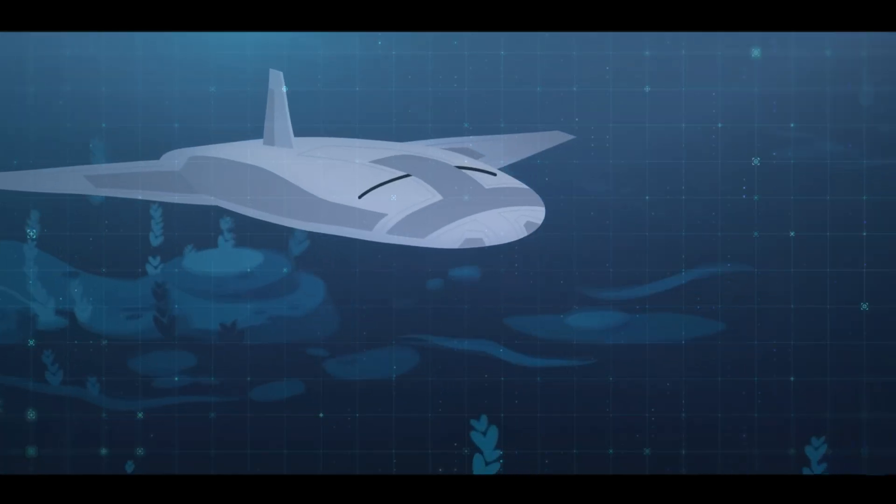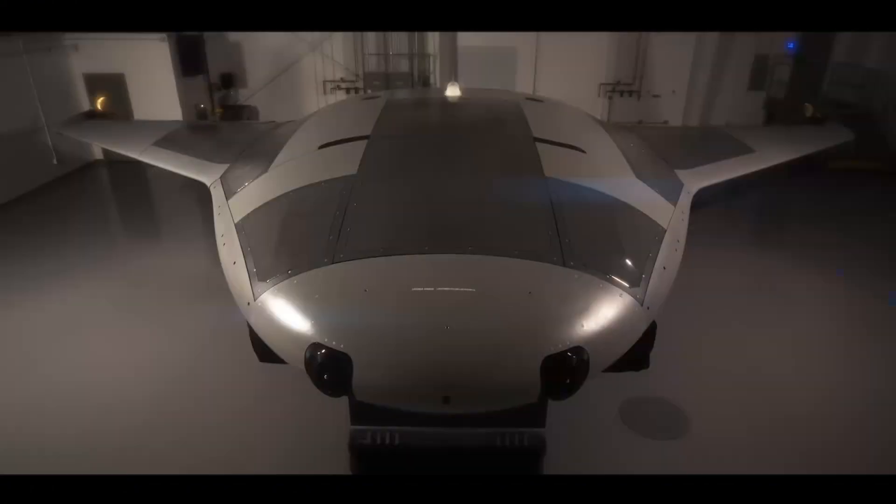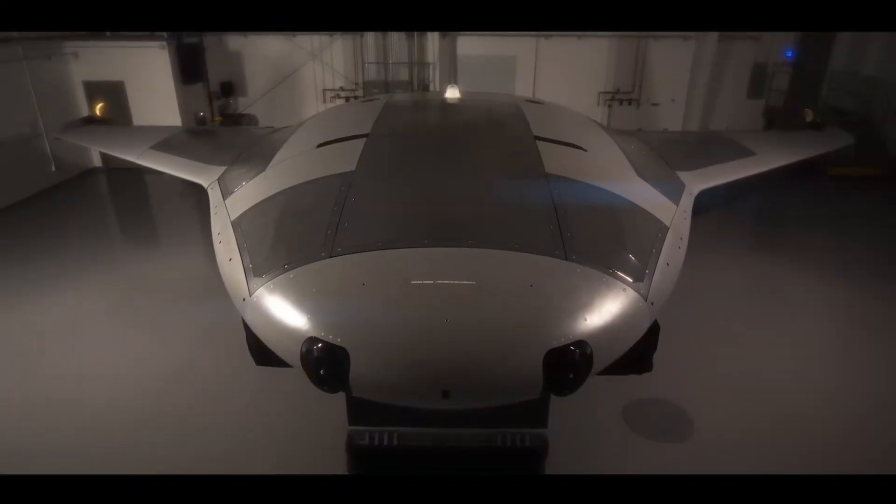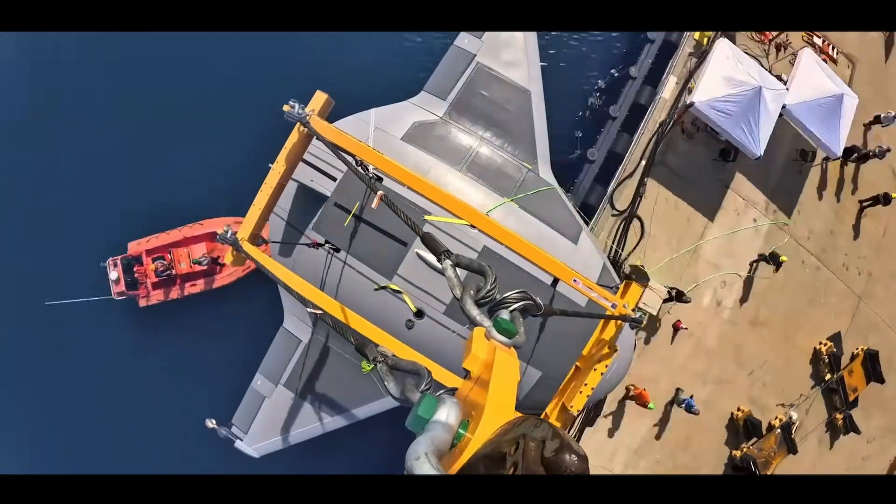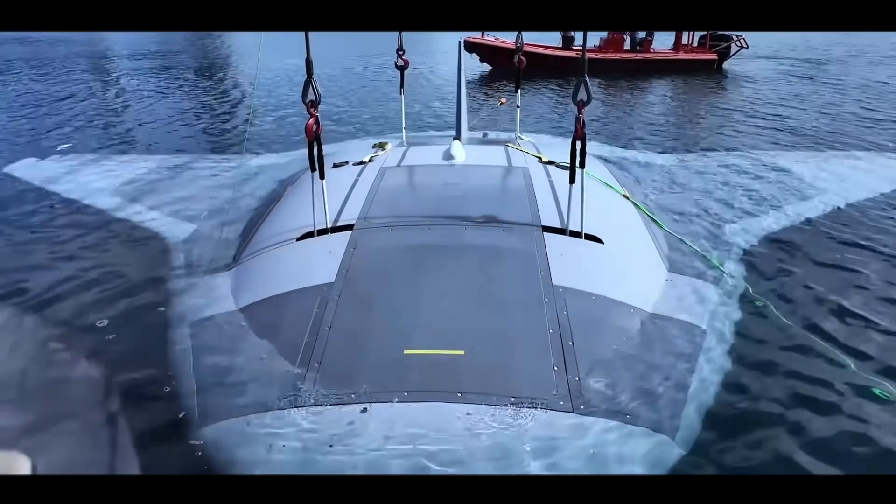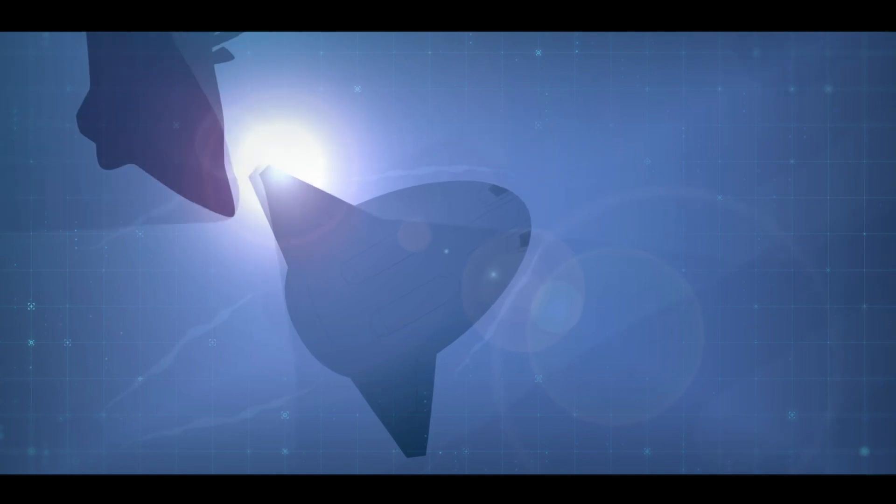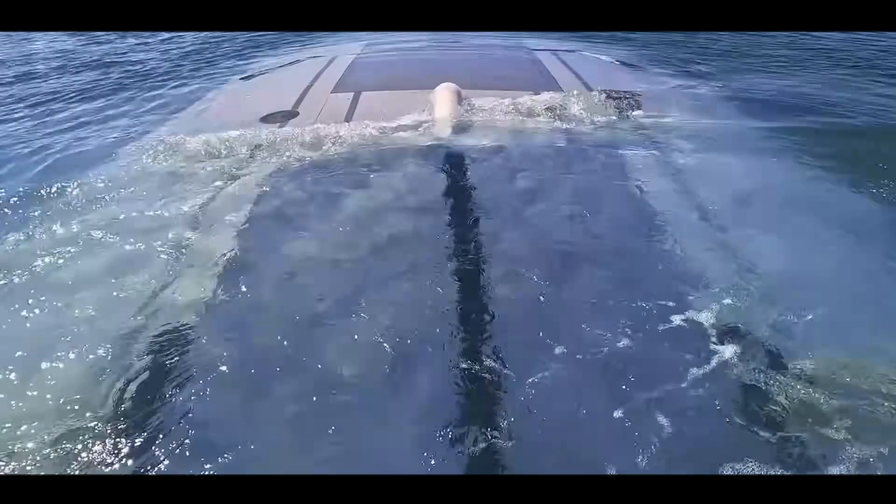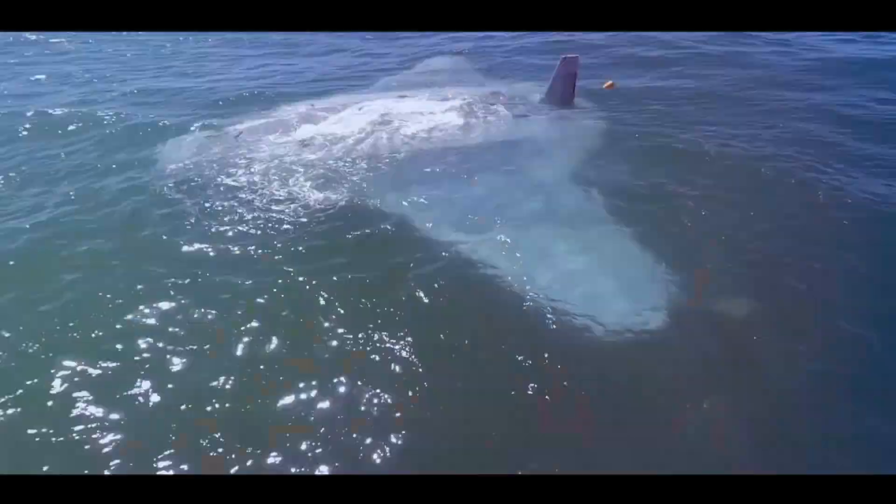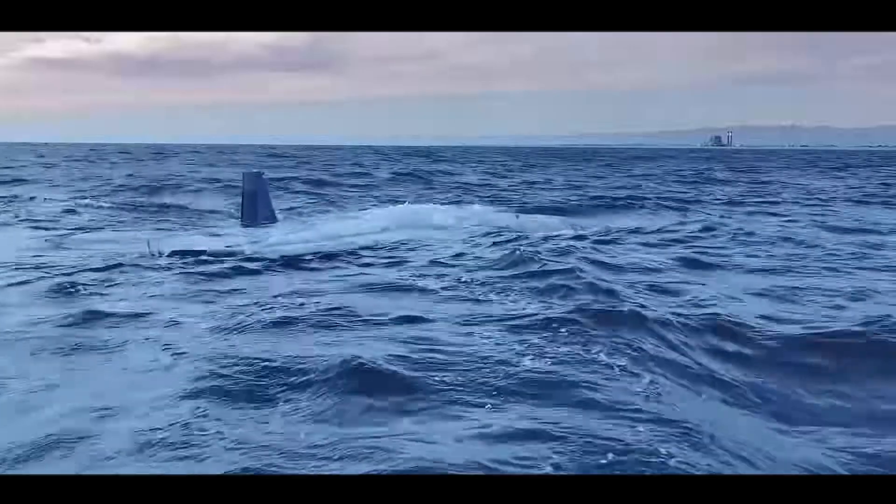Another remarkable feature of the manta ray is its modular and scalable construction. Engineered for rapid assembly and deployment, the drone is built from multiple sections that can be easily transported and reassembled near the mission site. This design not only minimizes logistical challenges but also ensures flexibility in various operational scenarios. Whether deployed from a ship, submarine, or coastal base, the manta ray's modularity allows for seamless integration into diverse mission profiles.